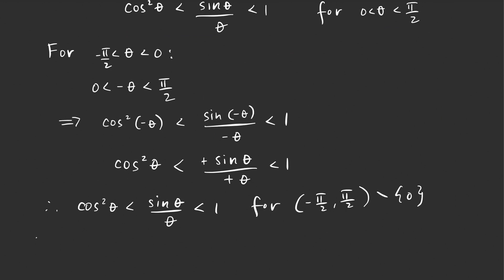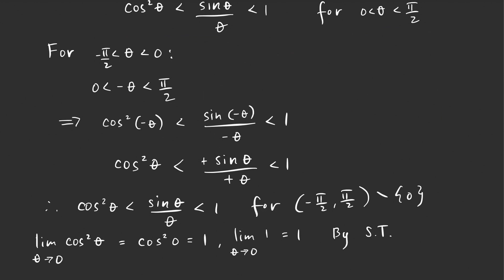Now, the limit of cosine squared theta as theta approaches zero equals one, since cosine is continuous at zero and cosine of zero is one, so one squared equals one. And the limit of one as theta approaches zero is just one. Therefore, by the squeeze theorem, we conclude that the limit of sine theta over theta as theta approaches zero is equal to one.